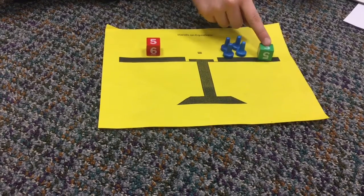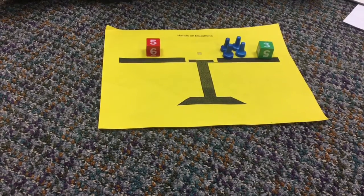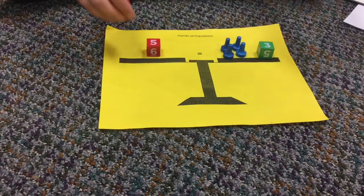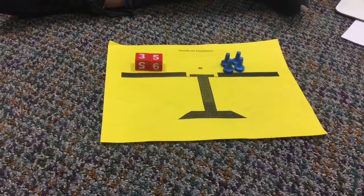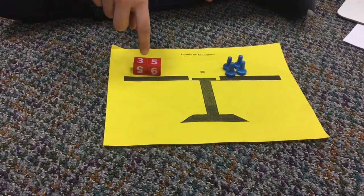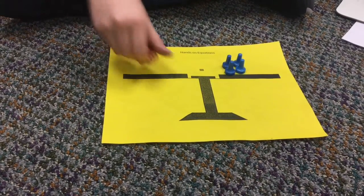So now our objective is to get this 3 out of the picture. So we're going to add positive 3 to each side. These will cancel each other out, because it's a pair of 0. And 5 plus 3 equals 8.